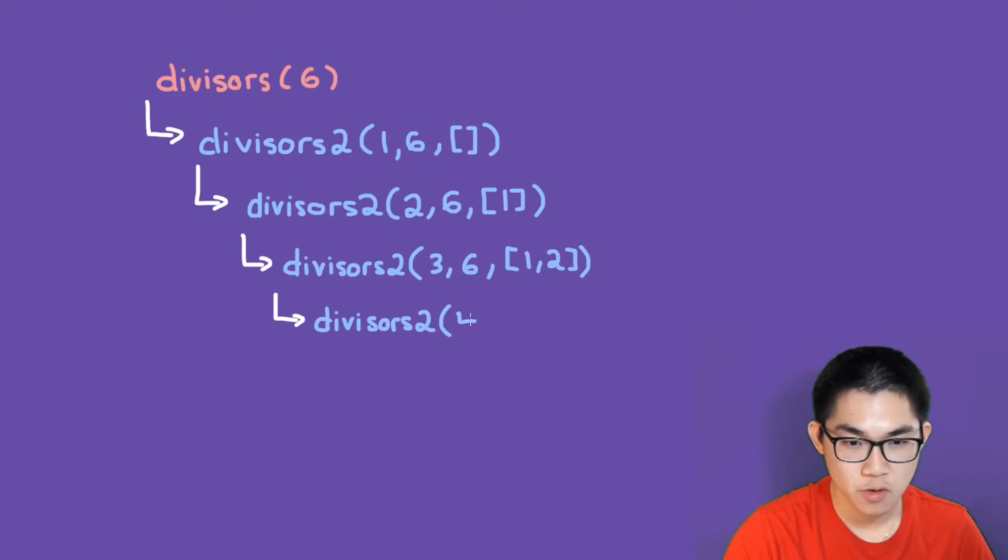This becomes 4. This is 6. And since 6 can divide 3, we add 3 into the list. So now we have 1, 2, and 3.